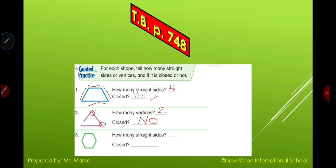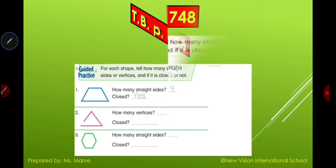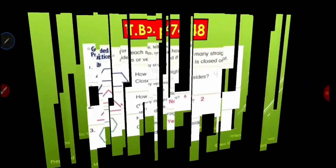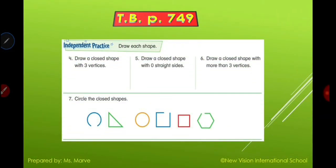Look at your answer for number three — are your answers the same as mine? Good job! You can take a picture and send it to teacher. Let's move on to page 749. You are going to draw each shape. Draw a closed shape with three vertices. Close your eyes and remember which shape has three vertices.